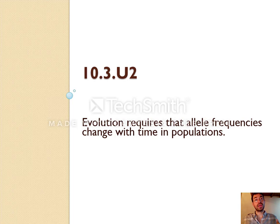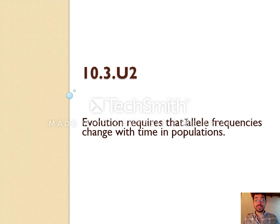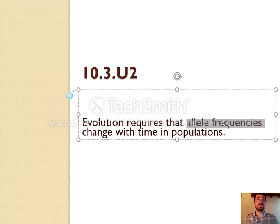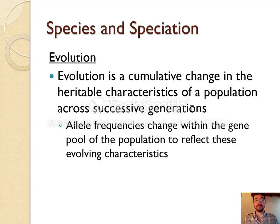Evolution is essentially a change in the heritable characteristics of a population over time. Another way of saying that is that evolution is when the allele frequencies change. Alleles are genes — they're heritable characteristics. So if the percentage of various alleles is changing from generation to generation, that is evolution. Evolution is a cumulative change in the heritable characteristics of a population over time, and allele frequencies changing the gene pool equals evolution.